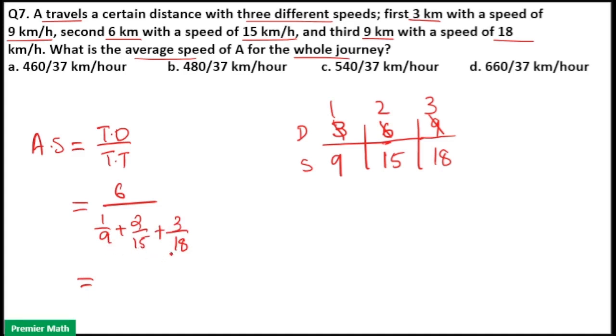LCM of 9, 15 and 18 is 90. So 6 into 90, and this LCM will be denominator. The LCM will come in the numerator, that is, into 90. 1 by 9 into 90 is 10. 2 by 15 into 90 is 12, because 15 into 6 equals 90, so 2 into 6 equals 12. 3 by 18 into 90 - 18 into 5 equals 90, so 3 into 5 equals 15.